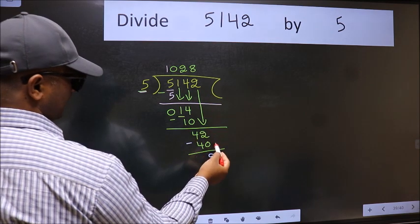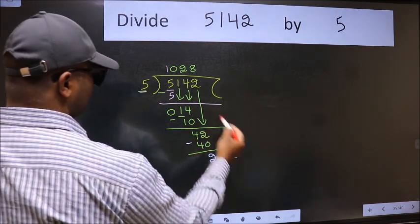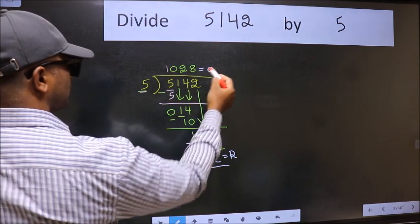No more numbers to bring down. So we stop here. This is our remainder and this is our quotient.